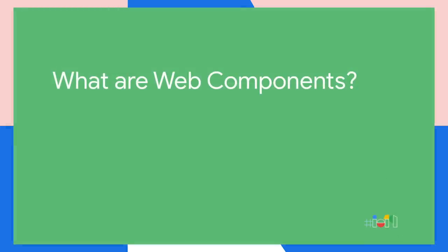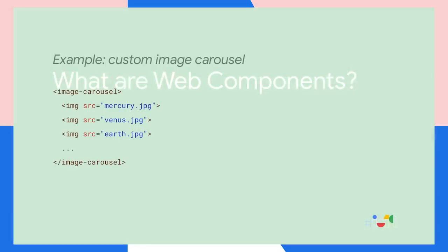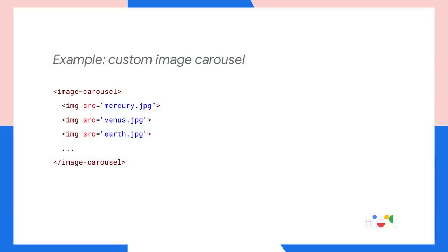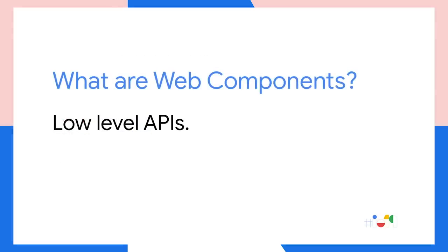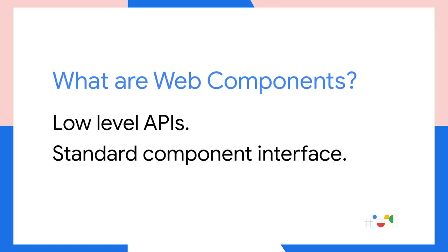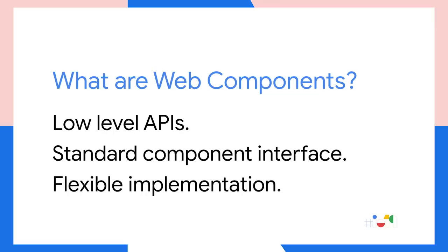What are web components? In modern web development today, pretty much everyone uses components to encapsulate UI functionality. Web components allow us to extend the browser with new components, like an image carousel, that can be expressed as normal HTML as if they were part of the platform. Web components are low-level browser APIs that give us a standard interface for defining new components, with a common way of being created using HTML and standard DOM APIs, and a common way of receiving and sending data using properties and events.